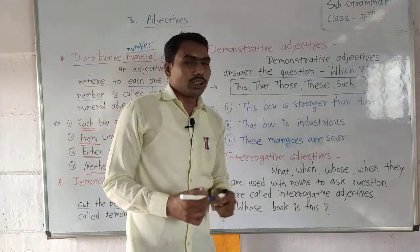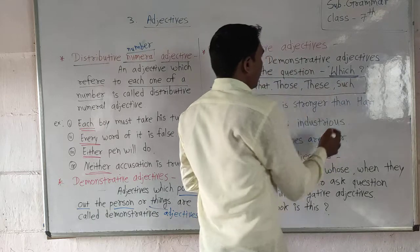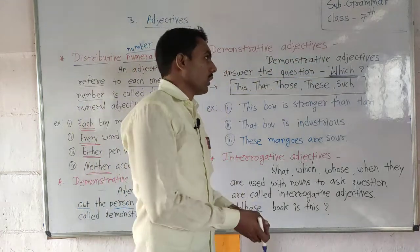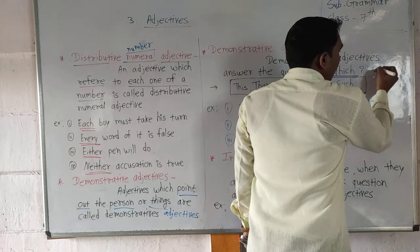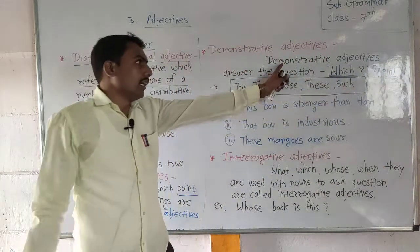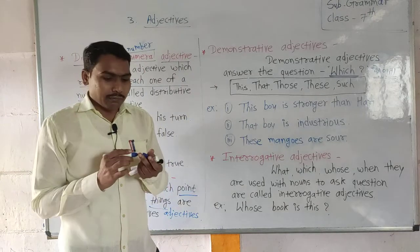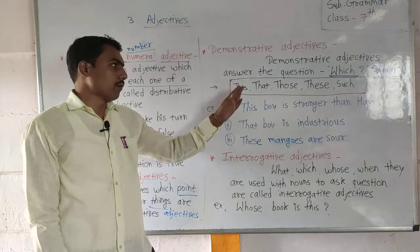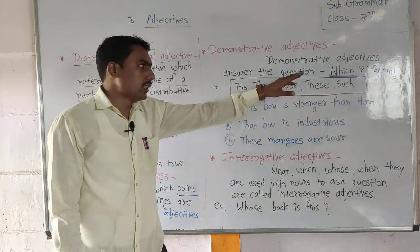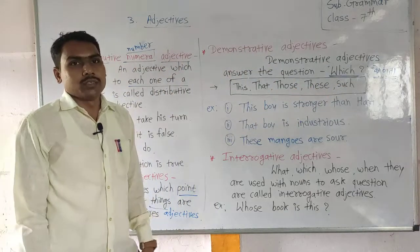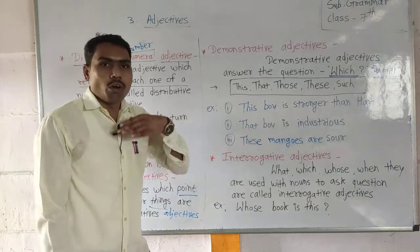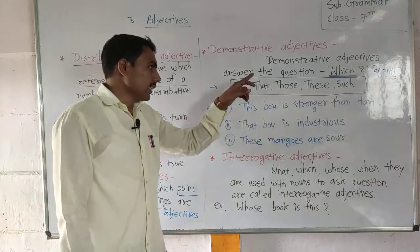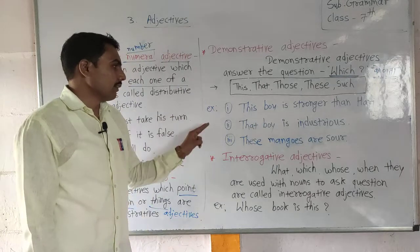Demonstrative adjectives answer the question 'which' — which one? The demonstrative adjectives are: this, that, those, these, and such. These words point out the person or thing being referred to.